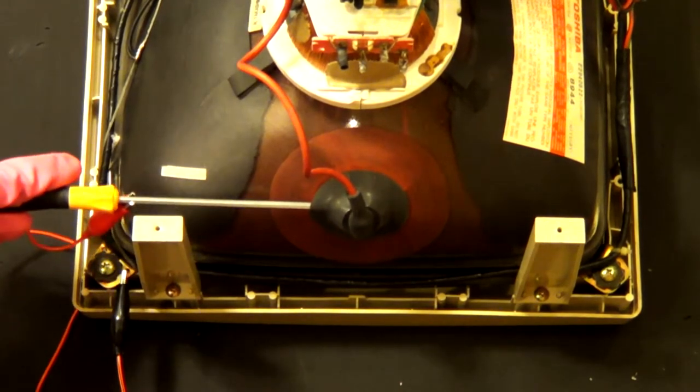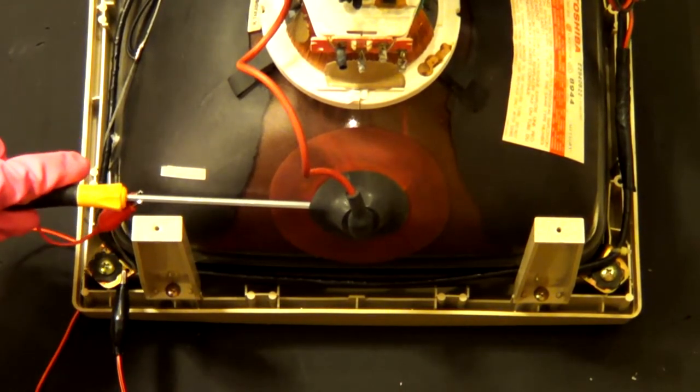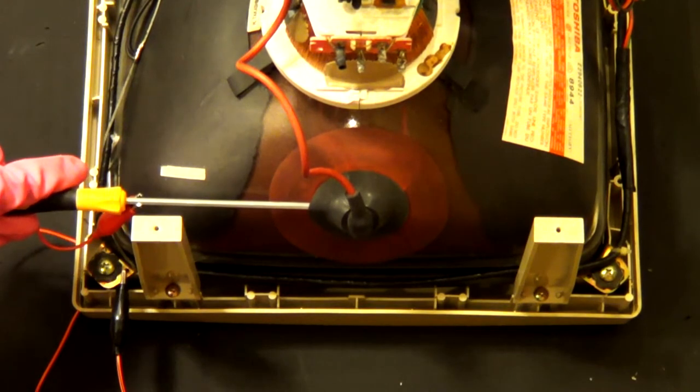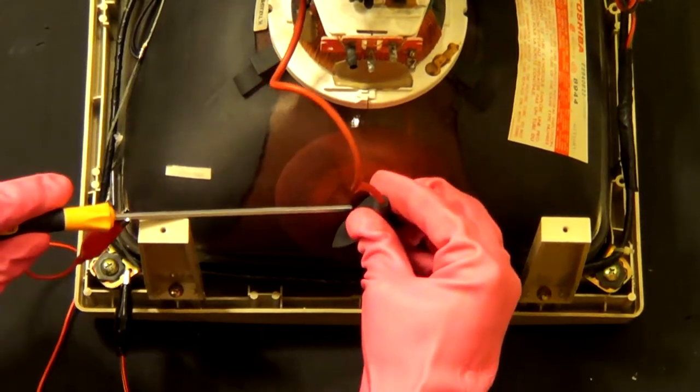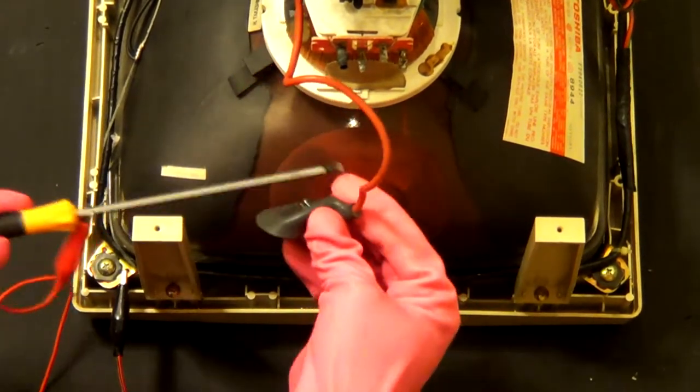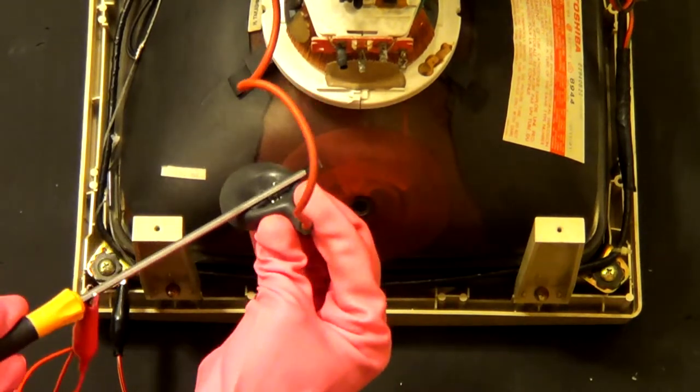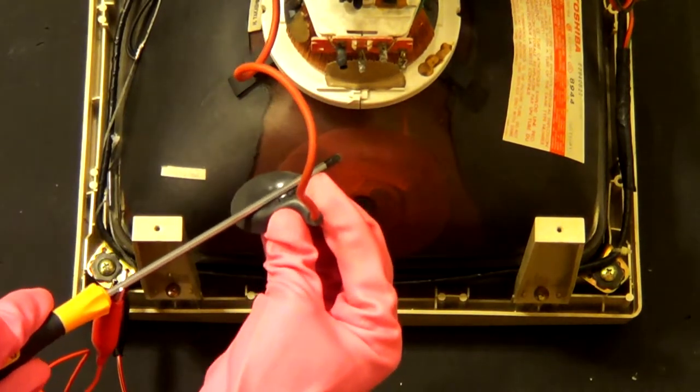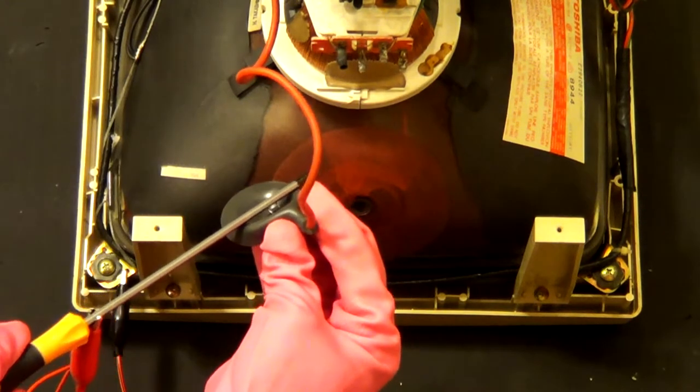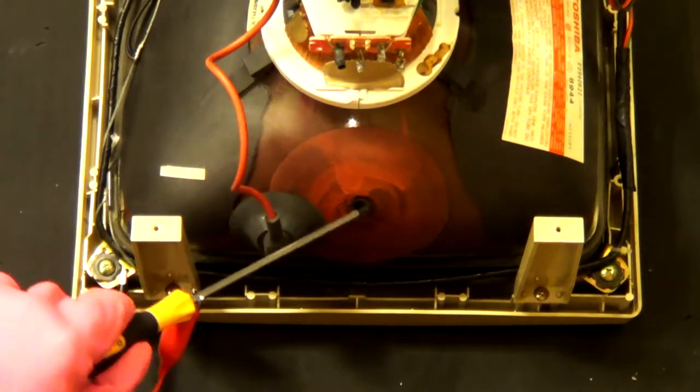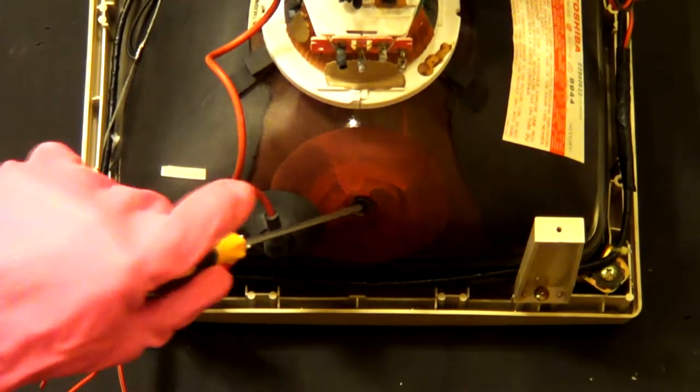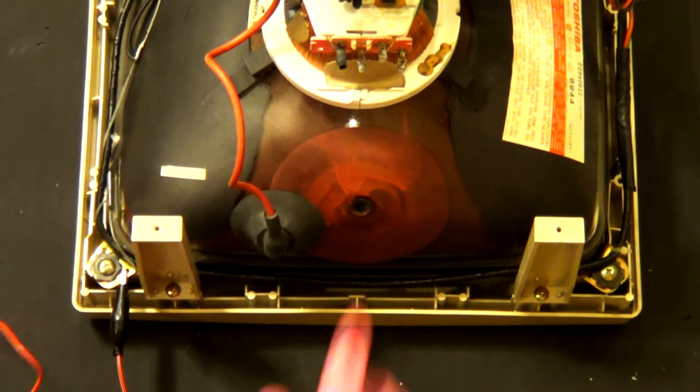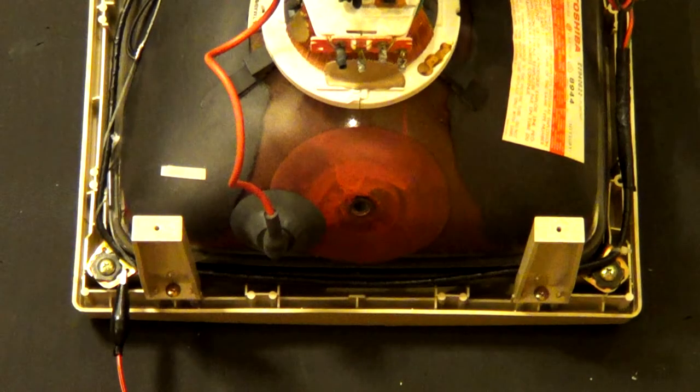Once we know that we have successfully discharged the monitor, slowly push one end of the metal prongs to remove the whole suction cup cable out. And just to be extra safe, touch both metal prongs of the suction cup cable with your flat head screwdriver, like so. And to be extra safe, insert the flat head screwdriver slightly inside the CRT monitor where the location of the metal prongs were, just to be sure that it is completely discharged. And that's it, you have successfully discharged your CRT monitor. We can now move on to the next step.